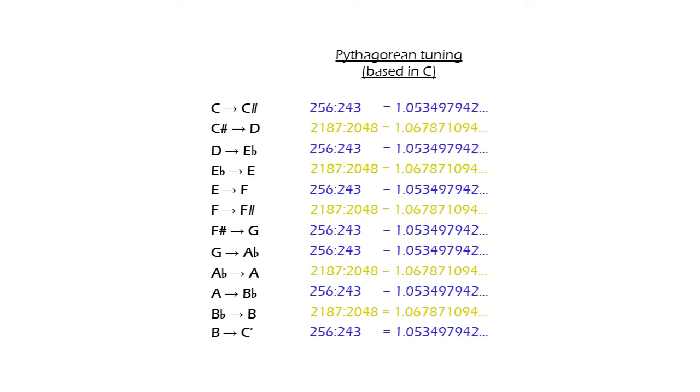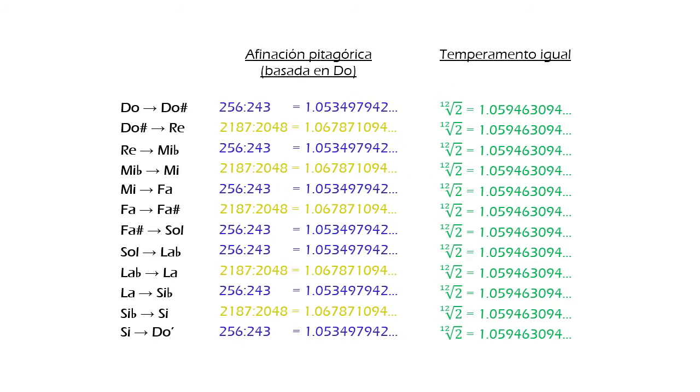Observe there are two different numbers. For simplicity, we will refer to these as the blue ratio and the yellow ratio. In equal temperament, there is only one ratio between any note and its next semitone, which is the 12th root of 2, or 1.05946394.